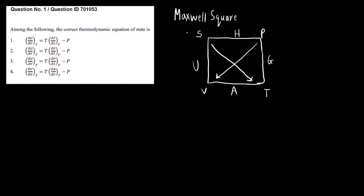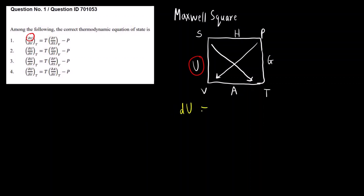This is the Maxwell square. On the left-hand side we have dU, which is the internal energy change, so we will write down the Maxwell relation for U. We write dU equals — since U is between S and V, we write dS and dV. In front of dS there is temperature T, and since the arrow points towards T it will be positive.